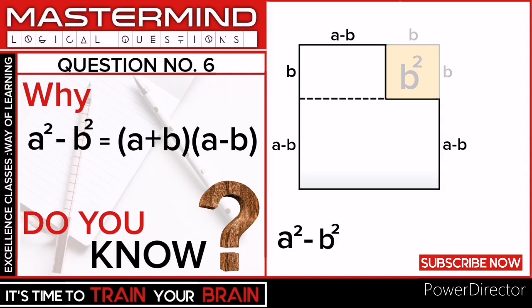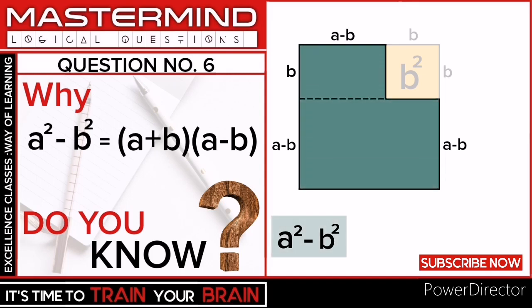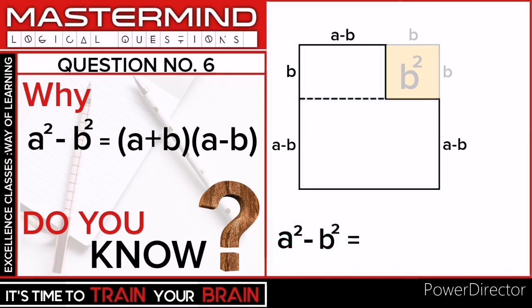Students, here we got this shape. The area of this shape is a² minus b², that is equal to the area of this rectangle plus the area of this rectangle.